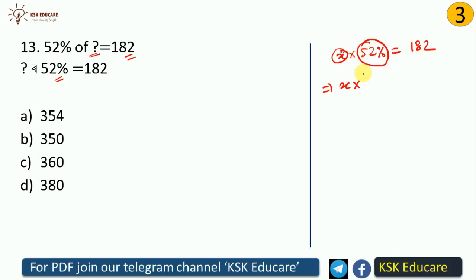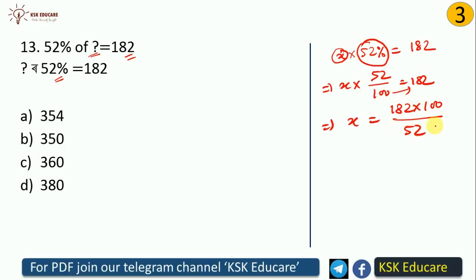When you get a fraction, basically how did you get 50 upon 100? You put X multiplied by 100. We solve this: X equals 182 divided by 52, multiplied by 100. We get the answer 350.